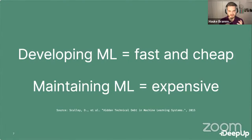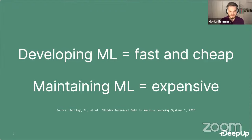Deployment to production is really not the end of a machine learning project — it's just another phase. We are not done when we deploy our first model. I want to talk about what problems an ML model can have in production, how to identify them in time, and what we can do about them.